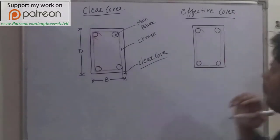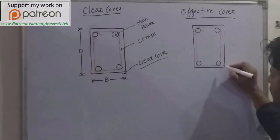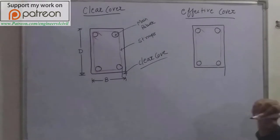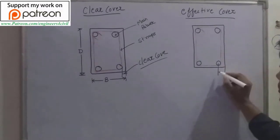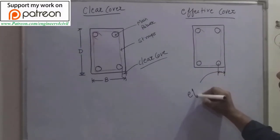Now what is the effective cover? Effective cover is the distance between the outer edge of the beam and the center of the reinforcement. The distance between these two is known as effective cover.